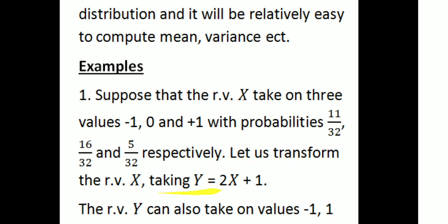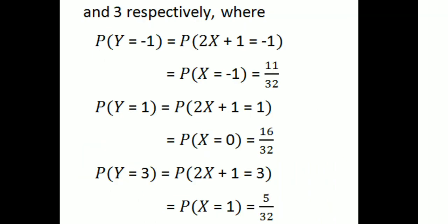Let us transform the random variable X, taking Y equal to 2X plus 1. If we have the random variable X, we apply the transformation Y = 2X + 1. The random variable Y can then take the values minus 1, 1, and 3 respectively.